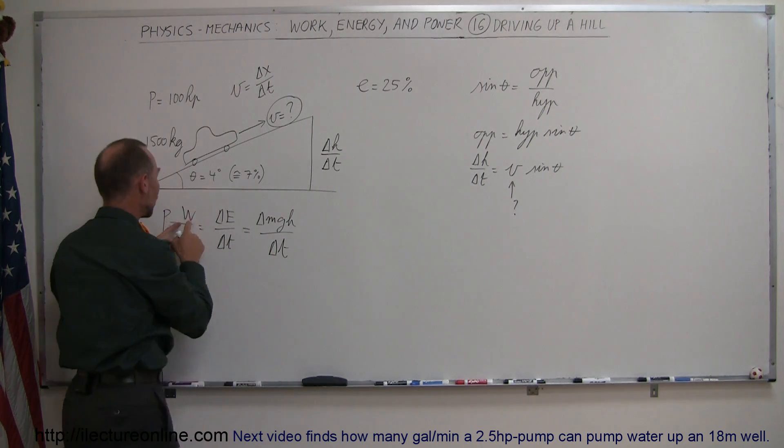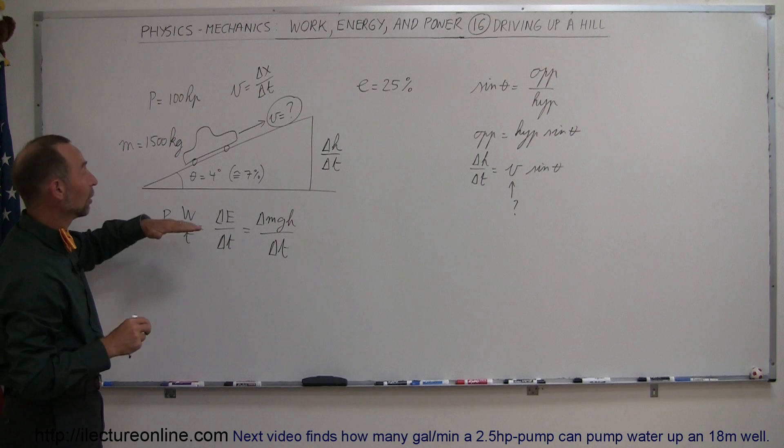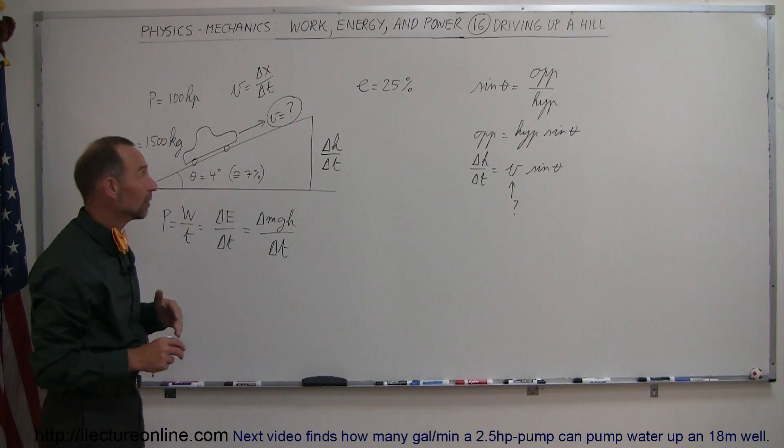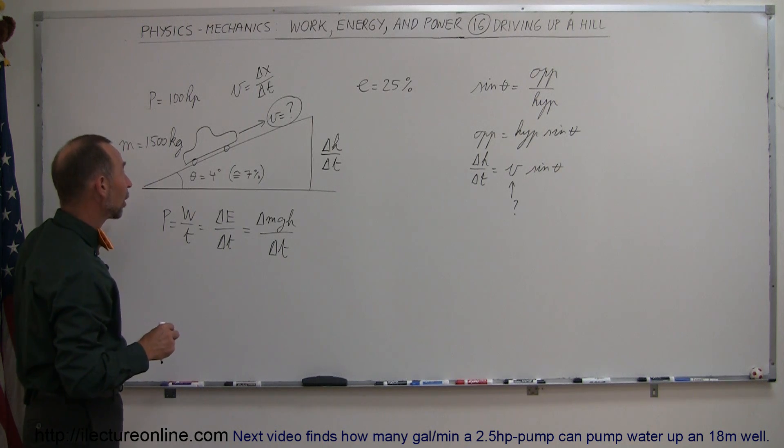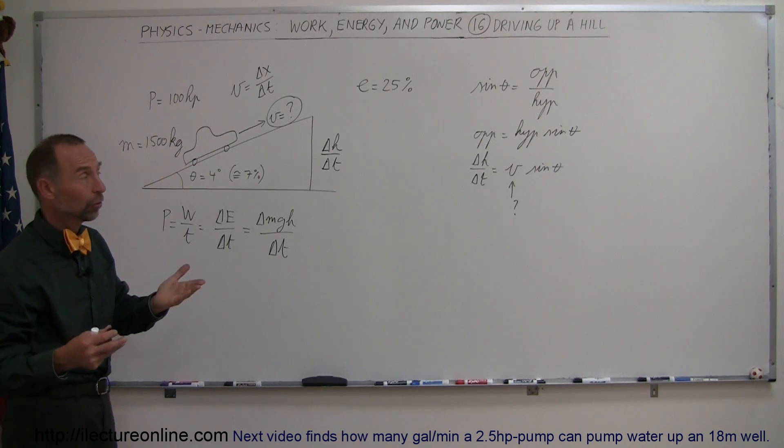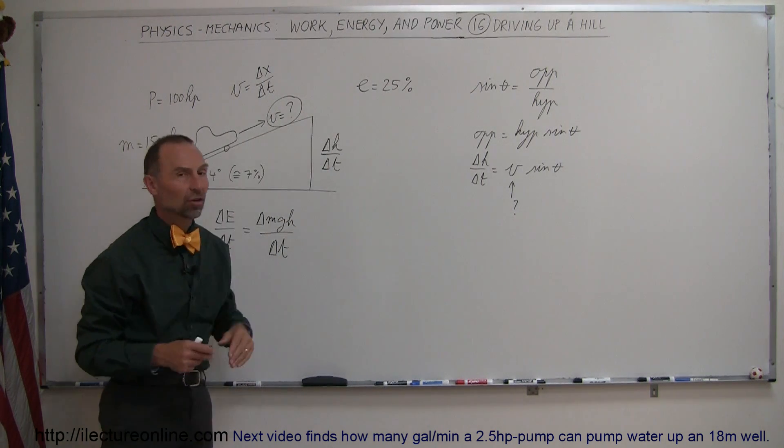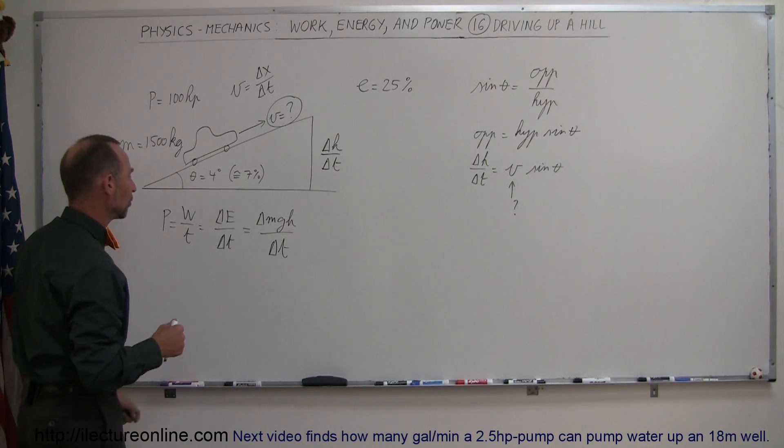So in this case, the work done on that car is simply to gain altitude. Remember, when the car is driving at constant speed up the hill, there's no energy required to keep the car going at a constant speed. That's Newton's first law, but energy is required for the car to gain potential energy, and that's where the power consumption is from.